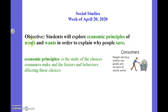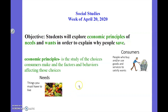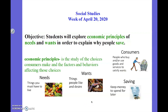Now I understand economic principles, but I want to remind myself about needs. So I'm going to look at that vocabulary card. Needs are things you must have to live. And I can look at that image and see fruits and vegetables — they provide our bodies with nutrients. Wants are things that people like and desire. The image is candy bars, and I definitely desire candy bars, but my body really doesn't need them to survive. The last word I want to unpack in my objective is save — savings means to keep money to spend for later. So we're going to be talking about why people save for needs and wants, why consumers do.